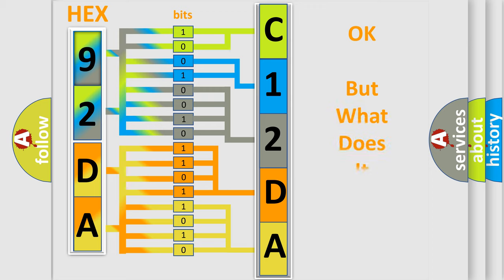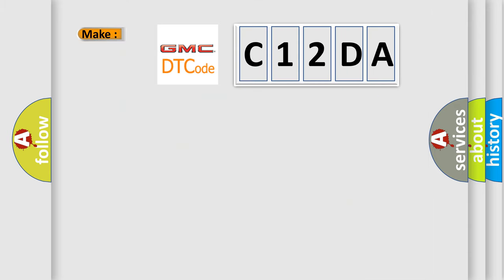The number itself does not make sense to us if we cannot assign information about what it actually expresses. So, what does the diagnostic trouble code C12DA interpret specifically?